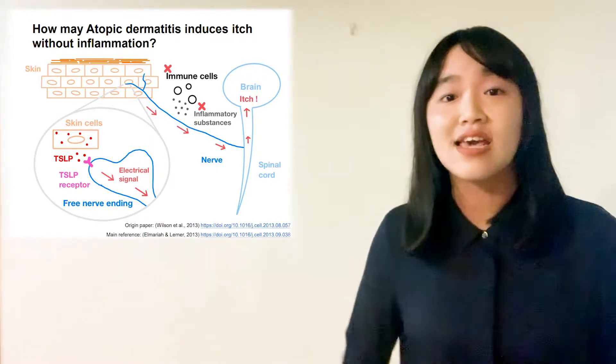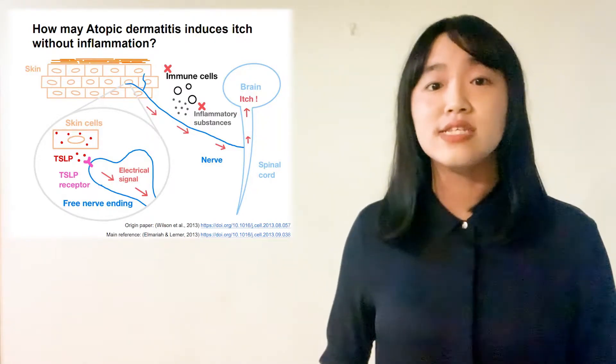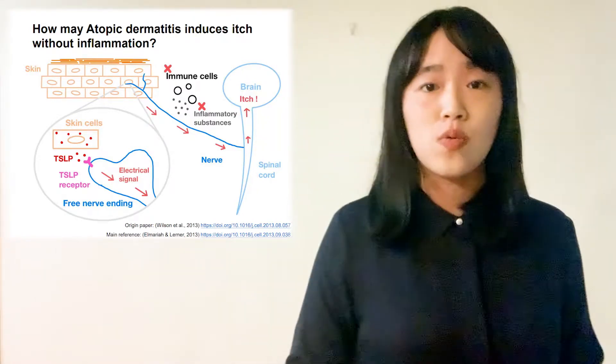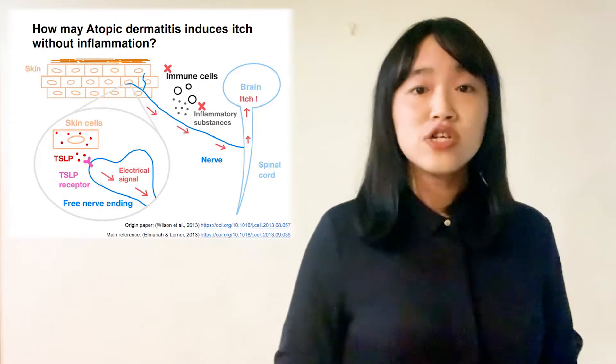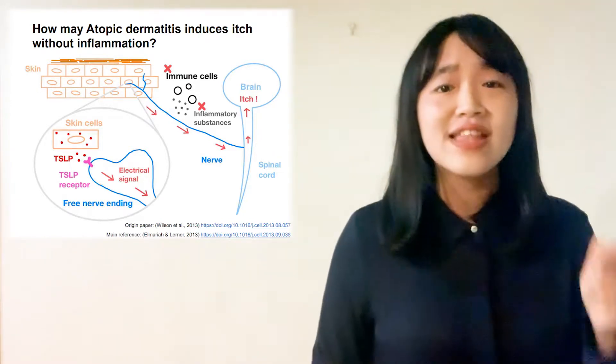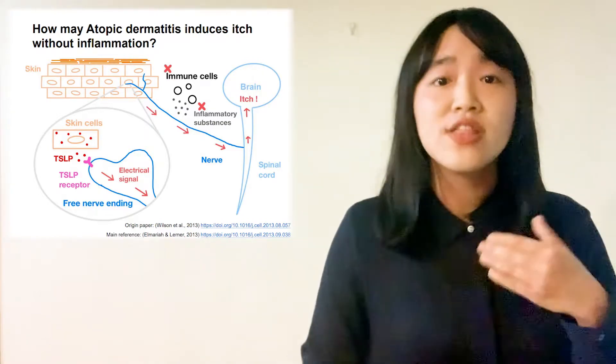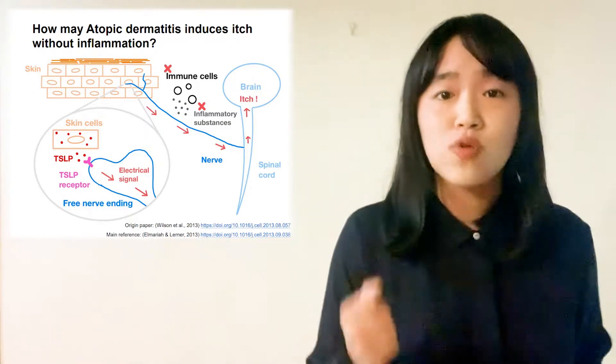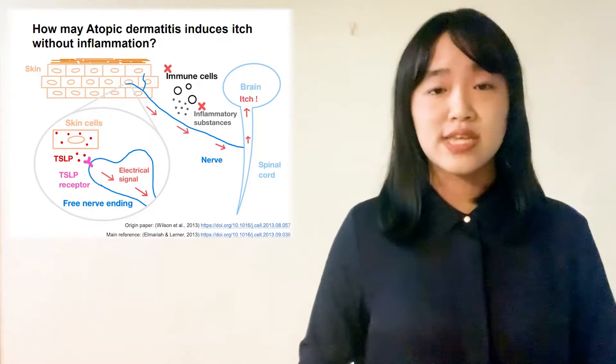Atopic dermatitis is a kind of chronic skin disease that affects millions of people around the world. The patients are often bothered by rashes due to inflammation, and they may have very intense itch which may make them toss and turn at night or even scratch so much to leave wounds on their skin.